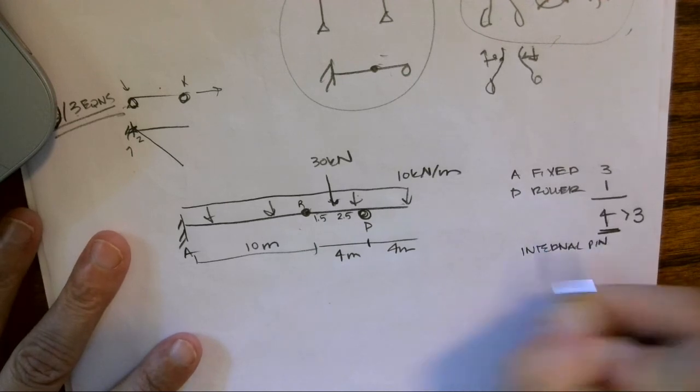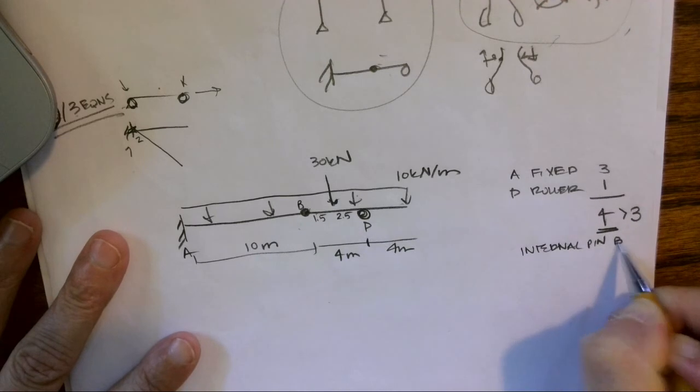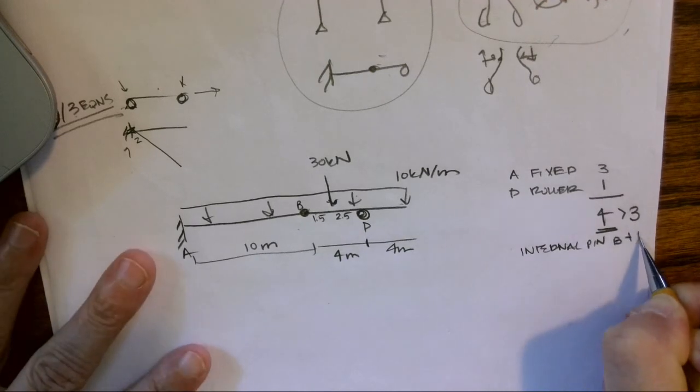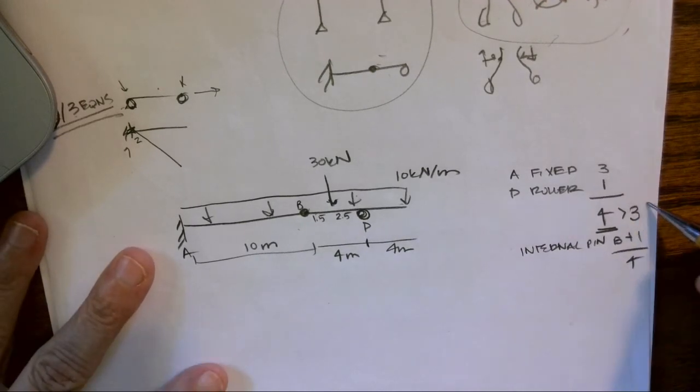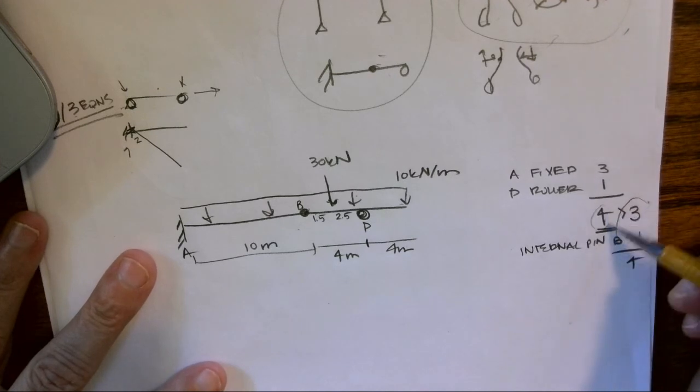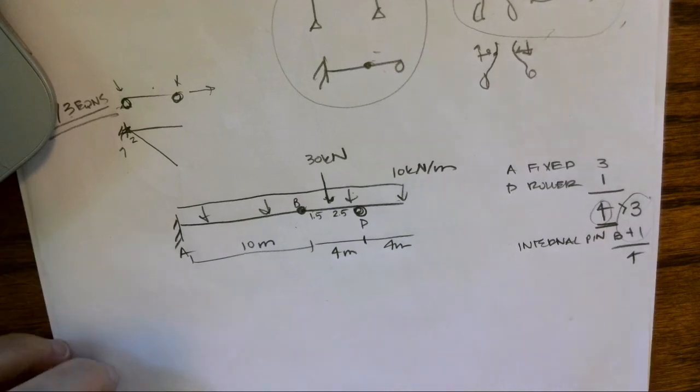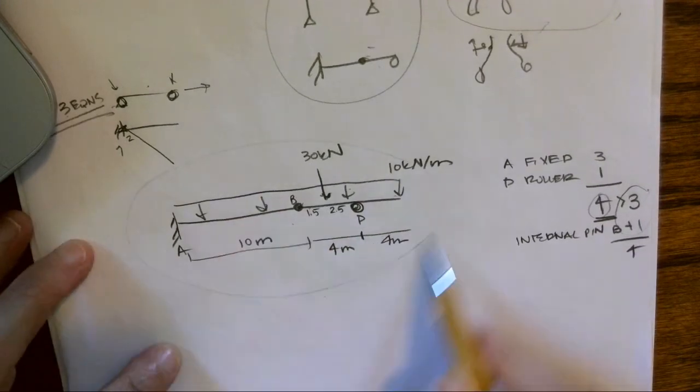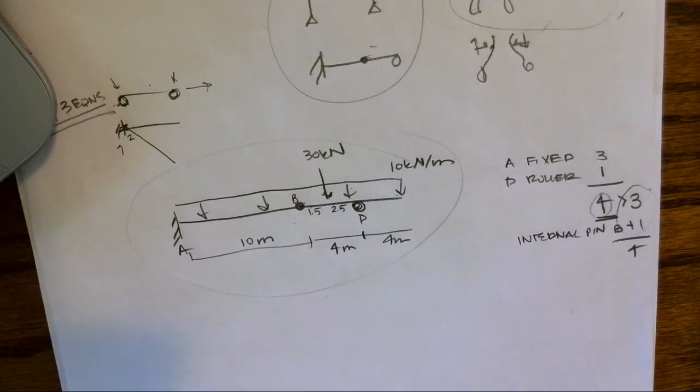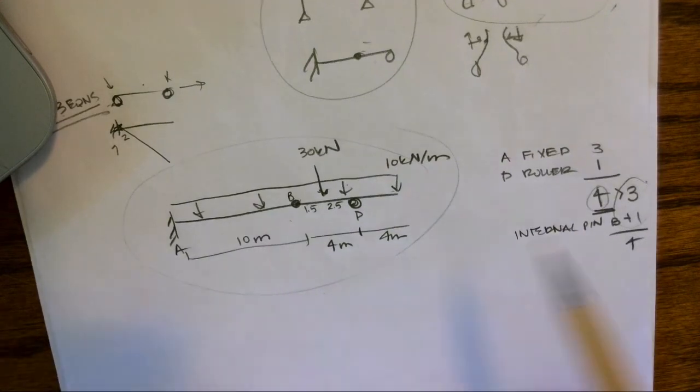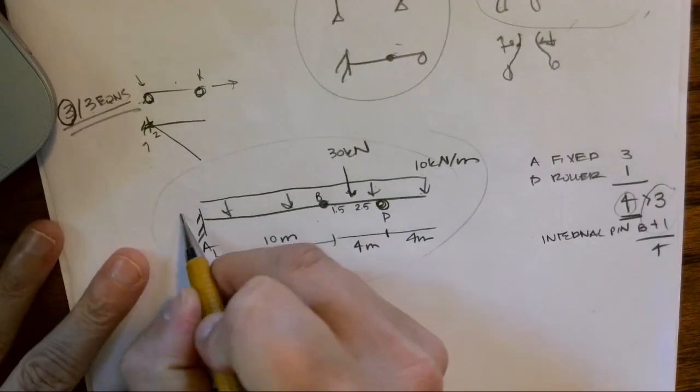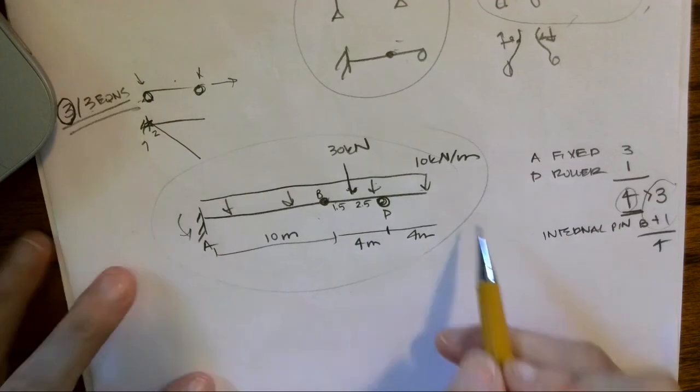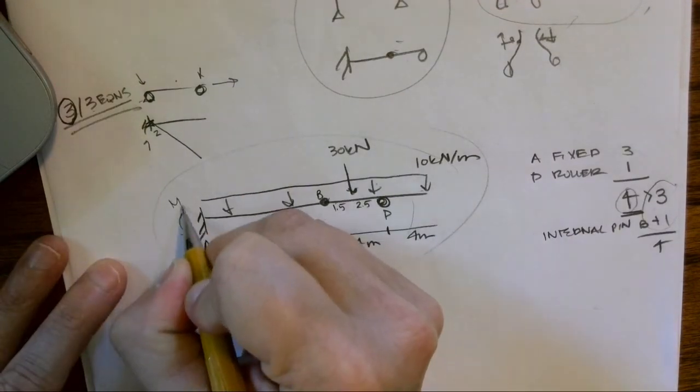That internal pin is at B, so that gives us plus one. We now have three equations of equilibrium plus an internal pin, which equals the four unknowns that we have. I cannot solve this using equilibrium. Some of you are gonna say, why can't you just sum moments about somewhere? Well, because I have this unknown moment here at A.